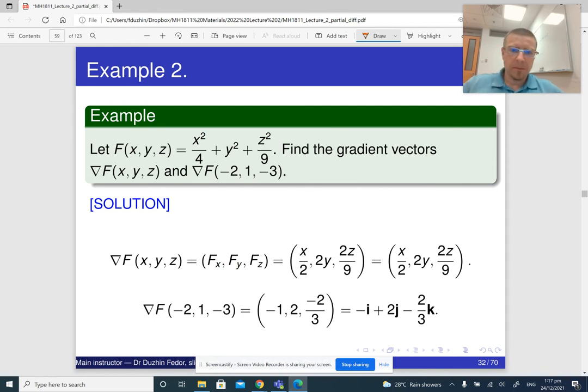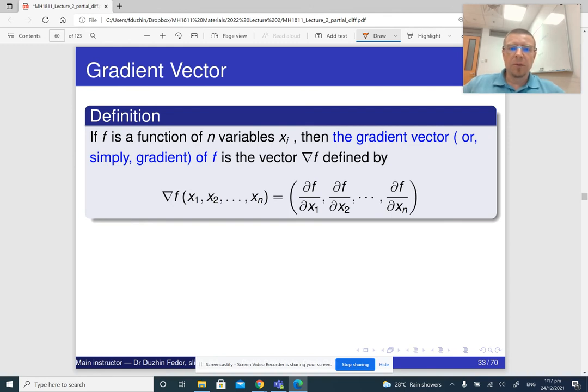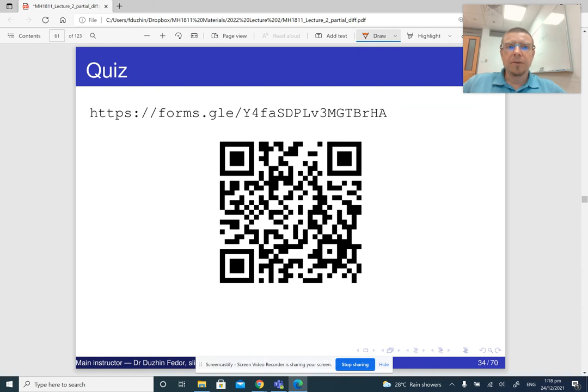I hope it makes sense. If we have a function of n variables, then the gradient vector is a vector with n entries. We don't really use the i, j, k notation. We just write down all entries in parentheses. That's basically it about the gradient vector. In the next lecture, we're going to see what the geometric meaning of the gradient vector is. It's not just a way to organize it neatly; there is a geometric meaning. Please pause the lecture and do the quiz.